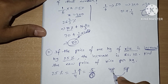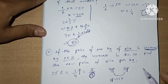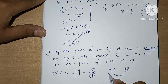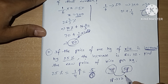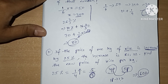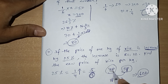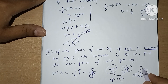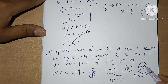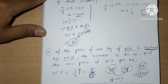Since 1 part is 12 rupees, if we need the old price it would be 4 times 12, which is 48. The increase is 12 rupees. The new price is 5 parts: 5 times 12 equals 60 rupees. This is how we calculate using mind calculations.